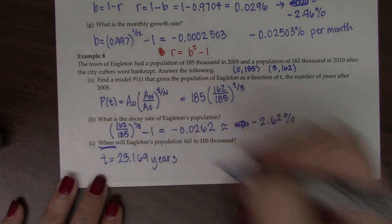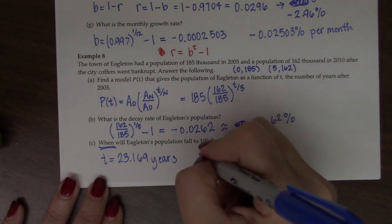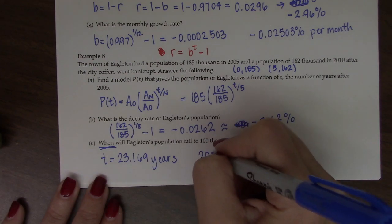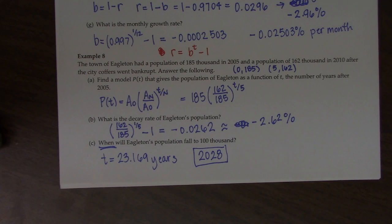Once again, though, it said when. So since this is since 2005, if I add 23 to 2005, it's going to be in the year 2028. So it didn't specify month. So we just assume, once again, we're starting at January 1st.